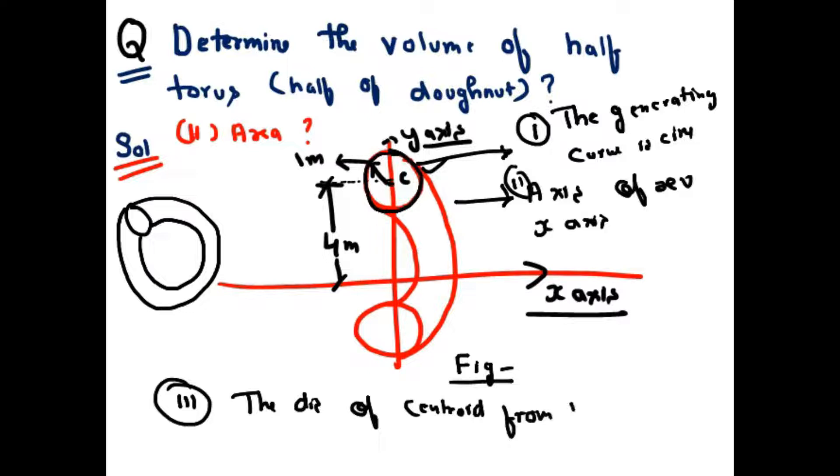Exactly, from the axis of rotation, what is given? 4 cm, 4 meter. This is the centroid point. If you see the distance from this point, this is 4. This is 4 meter, this is the point.